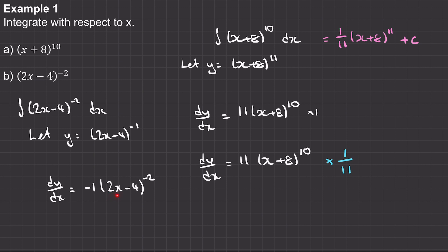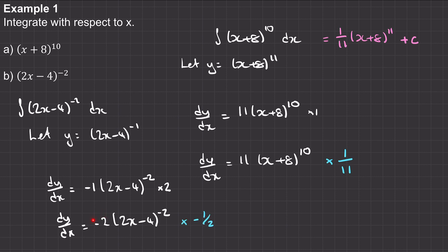We need to multiply by the derivative of the inner function; the derivative of (2x − 4) is 2, so we multiply by 2. This gives dy/dx equal to −2 lots of (2x − 4) to the negative 2. Now we need to scale this — we multiply by −1/2, so that negative 2 times negative 1/2 gives us 1. So our integral will be (−1/2)(2x − 4)^(−1) plus C.